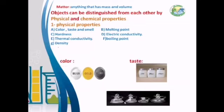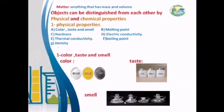So the first property is color, taste, and smell. Color, taste, and smell can be used to differentiate between many objects: between silver, gold, and platinum we can use color; between sugar, flour, and salt we can use taste; between perfume and vinegar we can use smell. But this property can't be used with oxygen and water, for example, because both of them are colorless, tasteless, and odorless. So we can't use this property to differentiate between them.